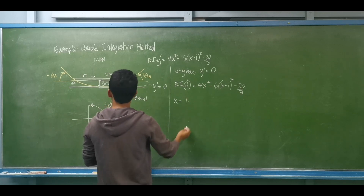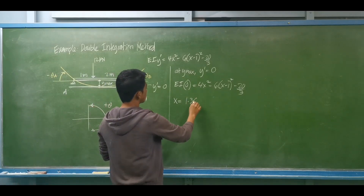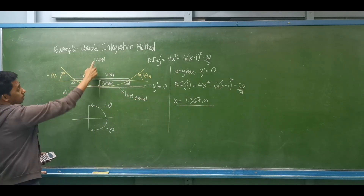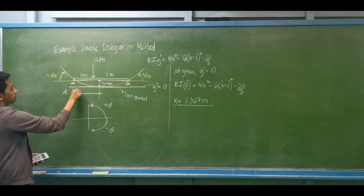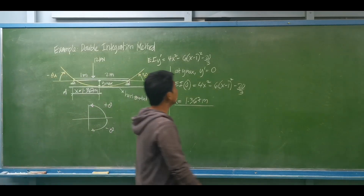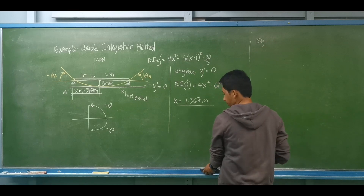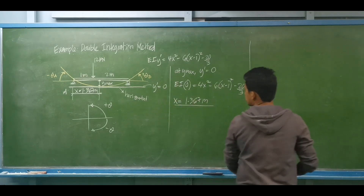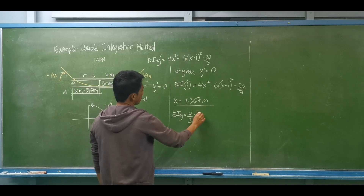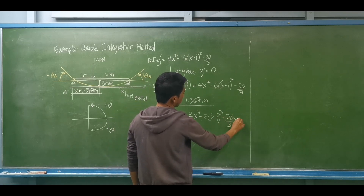The location of maximum deflection from A is x equals 1.367 meters. This is not at the midspan, and it is greater than 1 meter, so the second term is valid. Substituting into the deflection equation: EI y equals (4/3)(1.367)³ minus 2(1.367 minus 1)³ minus (20/3)(1.367).